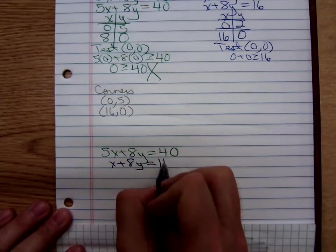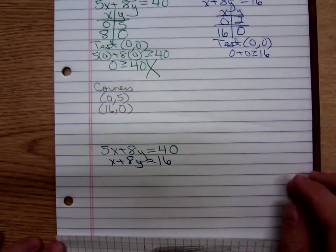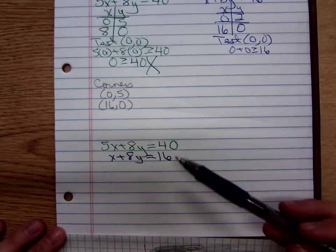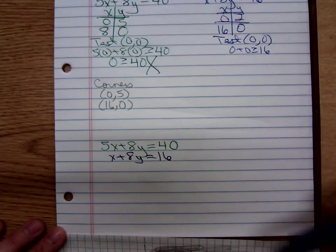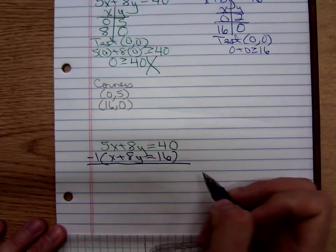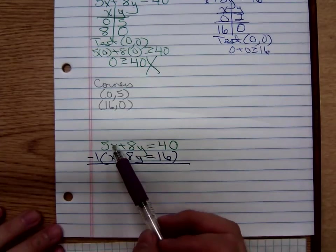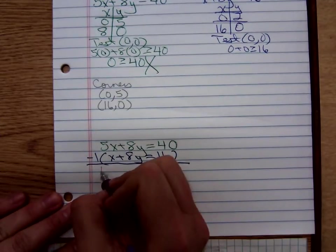So, 5x plus 8y equals 40 and x plus 8y is equal to 16. Oh, this one's nicer than that last one we did on the board. Using elimination, we already have the same coefficients on the y's. I just multiply that second equation by negative 1 and add the two together. What's that going to give us? That would be 5x minus 1x, that gives me 4x.